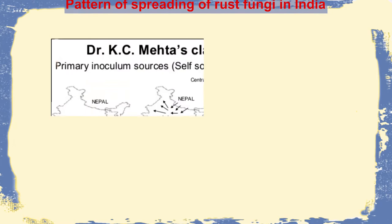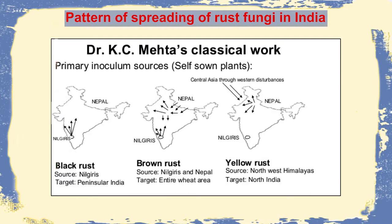Now, Dr. Casey Mehta, in the 70s, gave a unique observation. He actually showed that different parts of India are showing different rust fungus infection. These include the black rust, which is coming from the Nilgiris and spreading all over peninsular India.